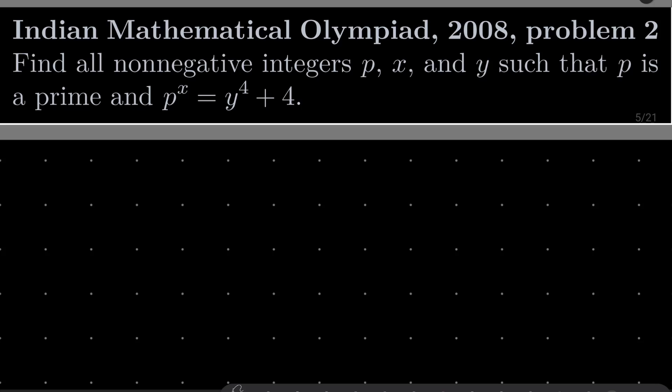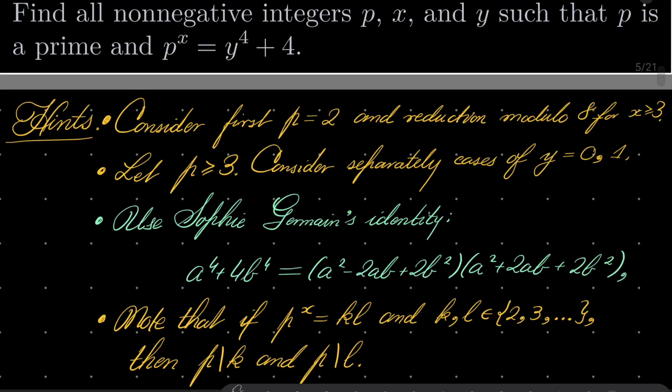So it's a nice diophantine equation, here are my hints. Consider first p equals 2 and do reduction modulo 8 when x is greater than or equal 3. Cases of x equals 0, 1 or 2 consider separately.